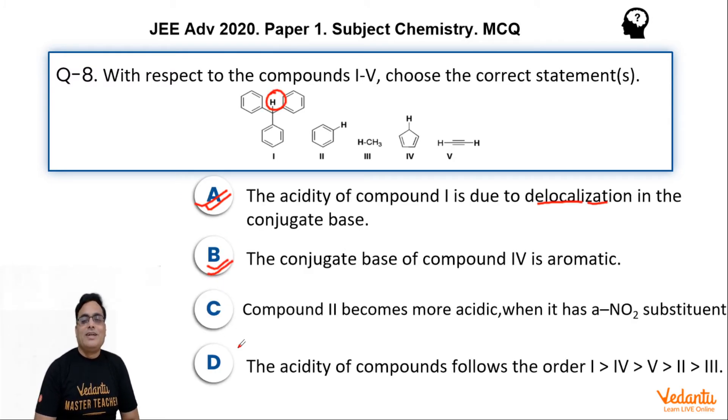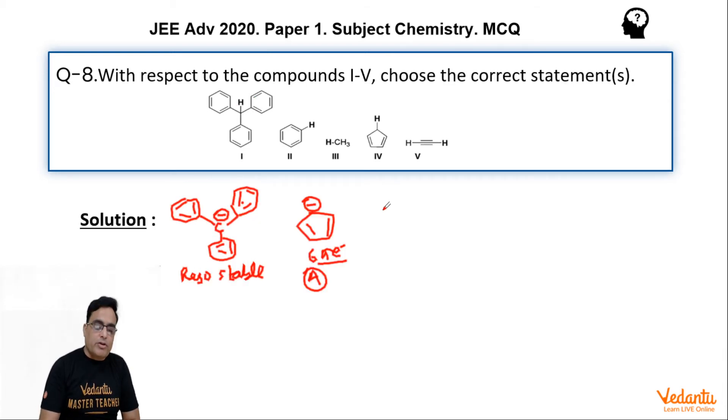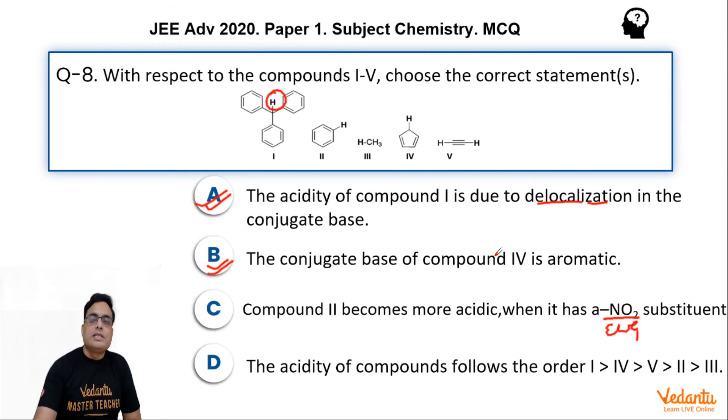Statement C: compound 2 becomes more acidic when it has a NO2 substituent. Of course, any compound, NO2 is an EWG, electron withdrawing group. And in presence of electron withdrawing group, acidic strength increases, Ka always increases. So this statement is in general true, that in presence of EWG, acidic strength will increase for any compound which is acidic in nature. Even statement C is true.